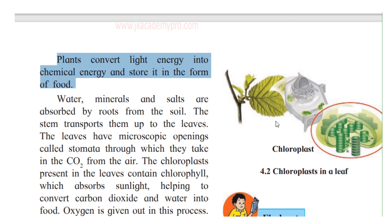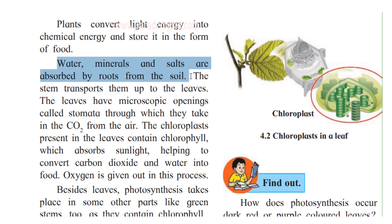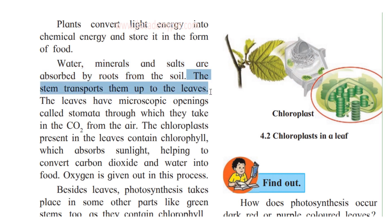Plants convert light energy into chemical energy and store it in the form of food. Water and mineral salts are absorbed by the roots from the soil, and the stem transports them to the leaves. That is the function of the roots — to absorb water, minerals, and salts — and the function of the stems is to transport these nutrients from the roots to the various parts of the plant, including the leaves.